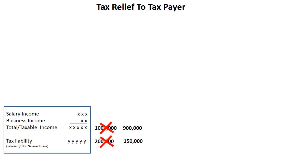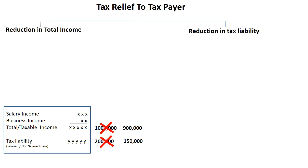The categorization of tax relief has two parts: first is 'deduction in total income,' and second is 'reduction in tax liability.' In tax terminology, reduction in total income is called a 'deduction,' and reduction in tax liability is called a 'tax credit.' Going forward in our session, we will use this terminology. If a deduction is applied, it means your total taxable income needs to be reduced. If a tax credit is applied, it means a reduction in tax liability.